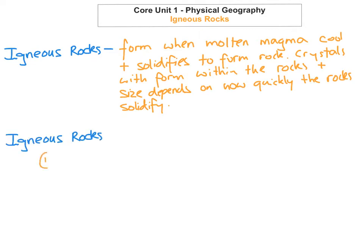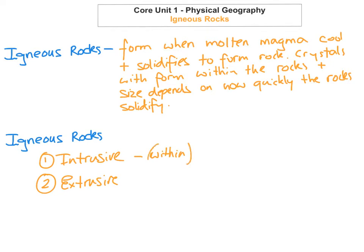There are two types of igneous rocks: intrusive igneous rocks and extrusive igneous rocks. Intrusive just means within the surface — within the Earth's crust — and extrusive means exit out of the surface, above the Earth's crust. That's a useful way to remember the difference.